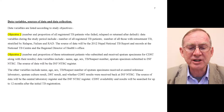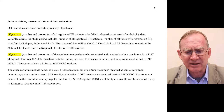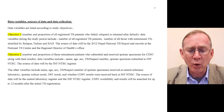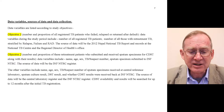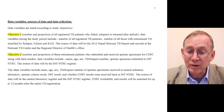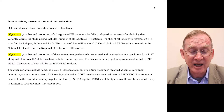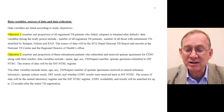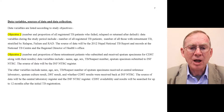Data variables, sources of data, and data collection is our next main heading. Data variables are listed according to study objectives. Objective one — the number and proportion of all registered TB patients who failed, relapsed, or returned after default — includes data variables such as number of all registered TB patients and number of retreatment TB cases stratified by relapse, failure, and return after default. The source of data will be the 2012 Nepal National TB Report and records of the National TB Centre and Regional Director's Office.